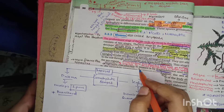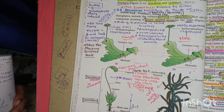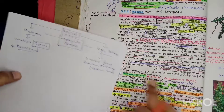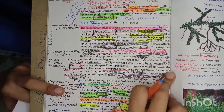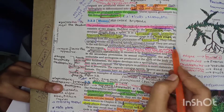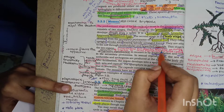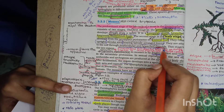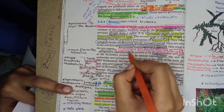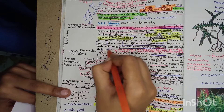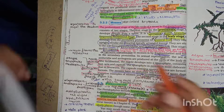In the gametophyte of mosses, spirally arranged leaves are present. They are attached to the soil through multicellular and branched rhizoids - this is very important: in mosses, the rhizoids are branched and multicellular. The leafy stage bears the sex organs.